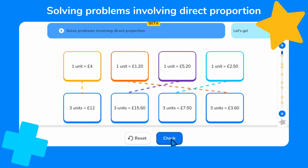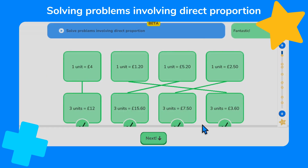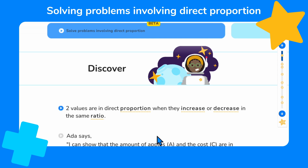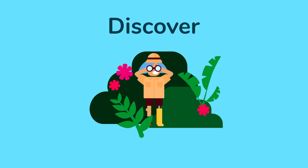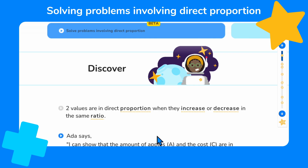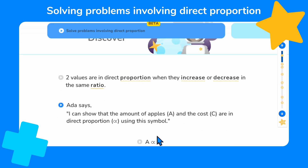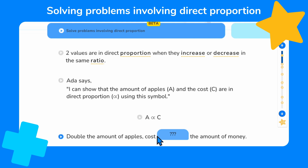Let's check our answer. Excellent, we've correctly joined the proportionally scaled values. Now that we've briefly recapped proportional scaling, we're ready to discover our new learning of how to solve problems involving direct proportion. We are reminded that two values are in direct proportion when they increase or decrease in the same ratio. Ada says: I can show that the amount of apples A and the cost C are in direct proportion using this symbol. So this means that A is directly proportional to C.